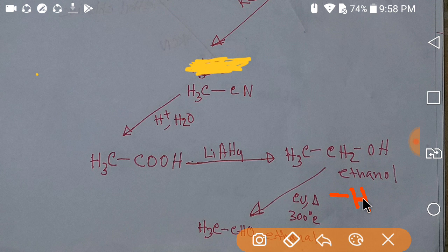This methylamine then reacts with nitrous acid. Nitrous acid is prepared from sodium nitrite. The nitrous acid converts the NH₂ group to an OH group, and this gives methanol, which is an alcohol.